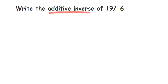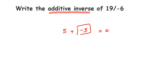Additive inverse means — let me take an example of a different number, not 19 by minus 6. Let me take a number like 5. Now, to this 5, what should we add to get the answer 0? If we add minus 5 to 5, we get 0. So minus 5 is the additive inverse of 5.